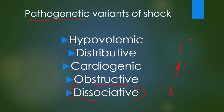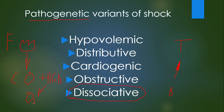What other conditions can produce insufficient oxygen delivery to tissues? In the case of fire, when people inhale smoke, carboxyhemoglobin forms in the blood. Carboxyhemoglobin binds oxygen too tightly — it 'likes' oxygen too much and does not release it to the tissues. This is the pathogenesis of dissociative shock.